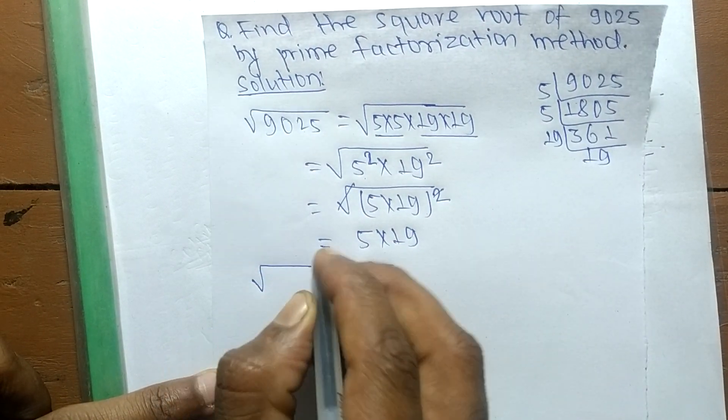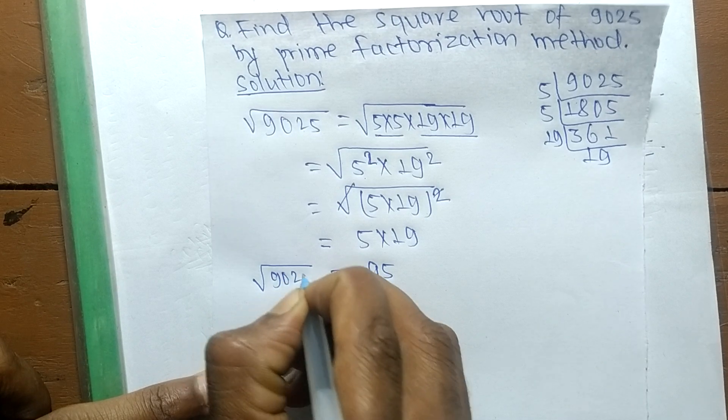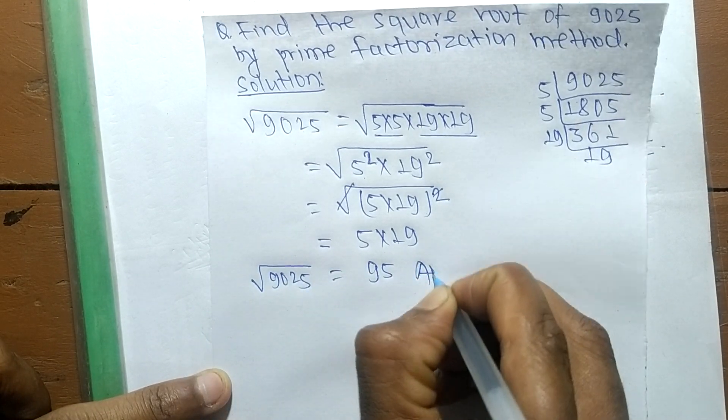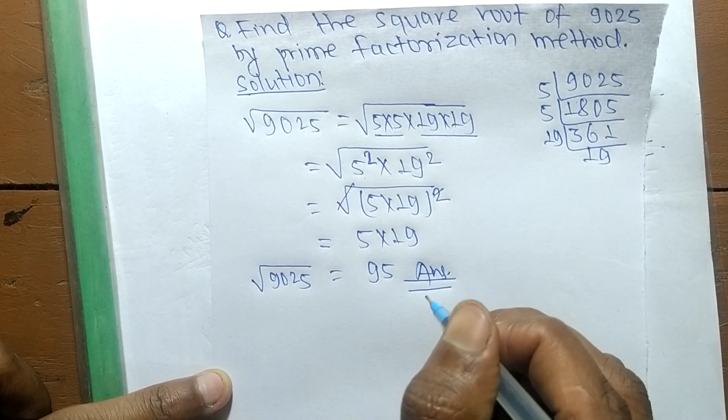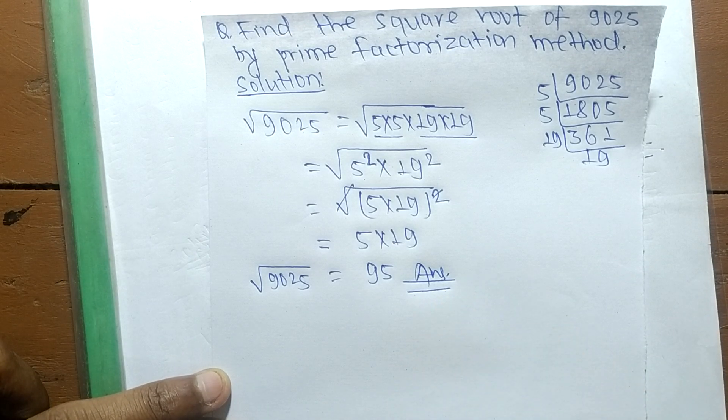Therefore, the square root of 9025 is equal to 95. That's all for today, thanks for watching!